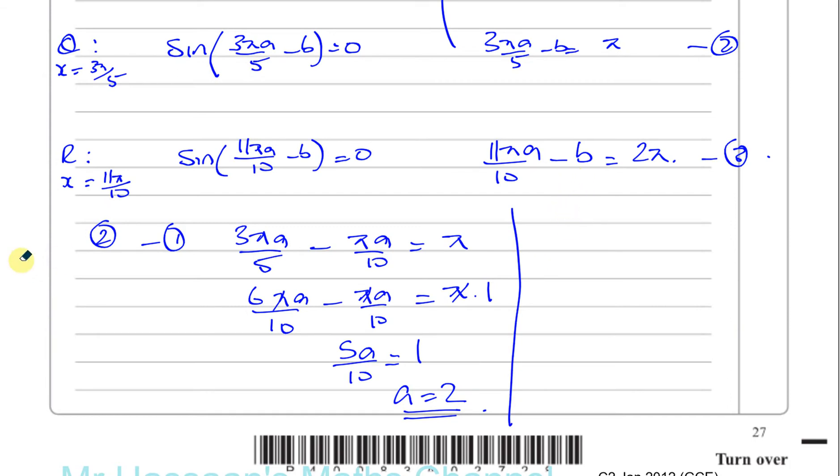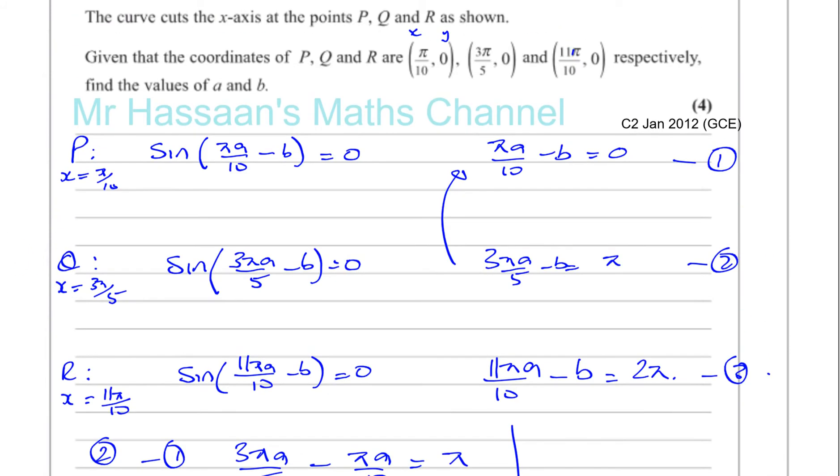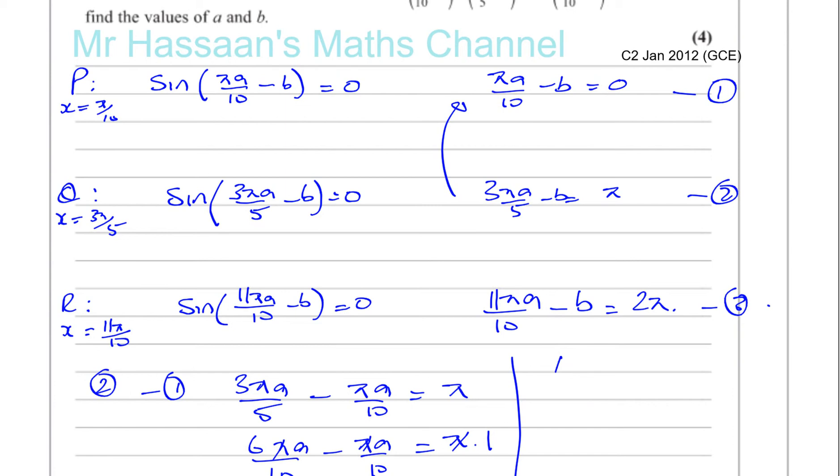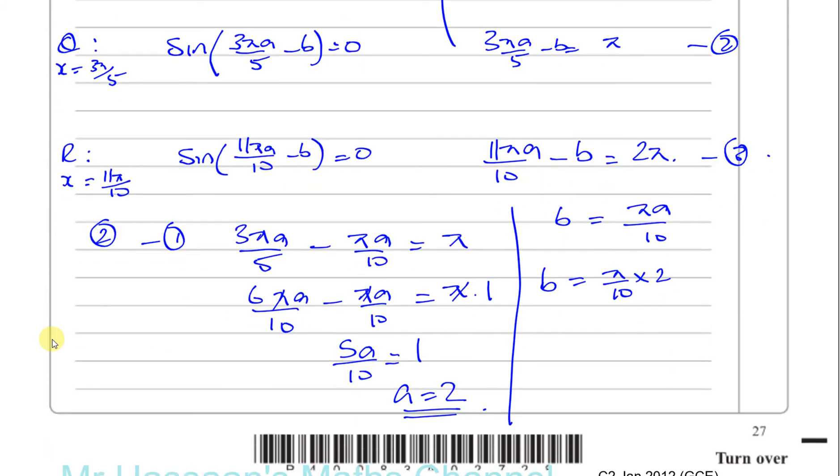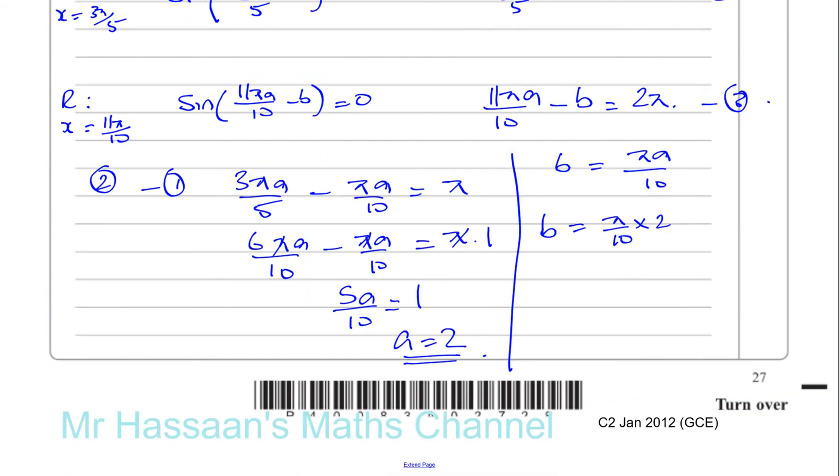And then for B, we can just substitute that into one of these equations. Like this one, for example, we know that B is equal to pi A over 10. So B is equal to pi over 10 times 2, because A is 2. So B is equal to pi over 5. So I hope that was clear for you. That's A and that's B.